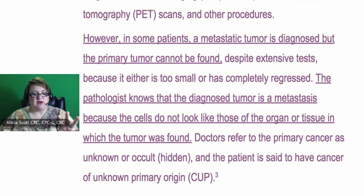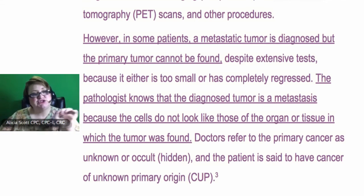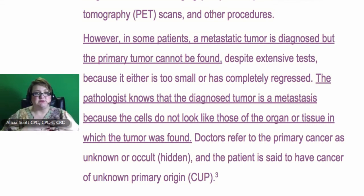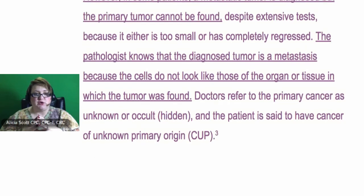However — this is underlined, that's why I want you to pay attention — in some patients, a metastatic tumor is diagnosed but the primary tumor cannot be found even when they do tests. The pathologist knows that the diagnosed tumor, the metastatic breast, is a secondary because the organ or tissue in which the tumor was found is not the same as the cells that are cancerous.